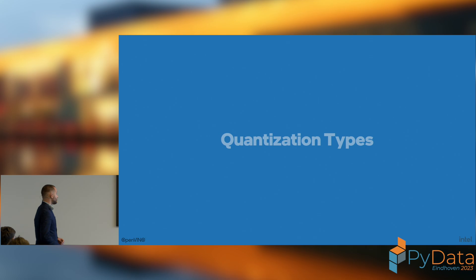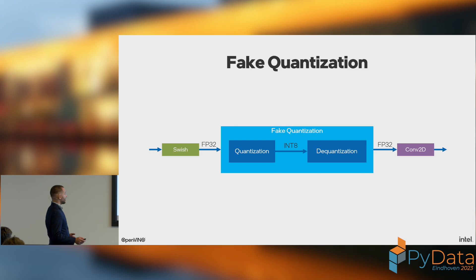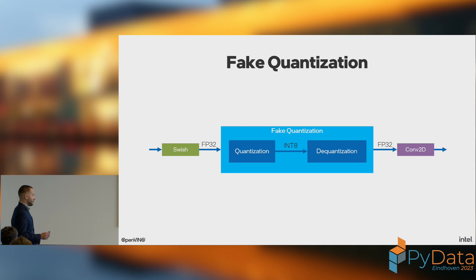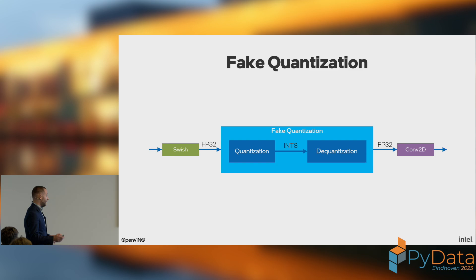The first quantization type is fake quantization. It's not real quantization because we perform quantization and immediately de-quantize — the input is FP32 and the output is also FP32. What we do is generate quantization error, which will be useful in understanding quantization-aware training.